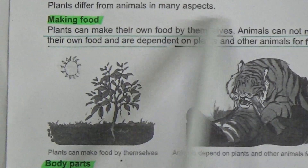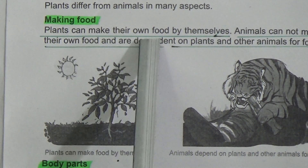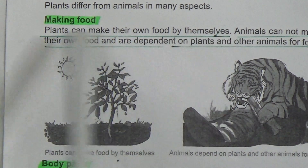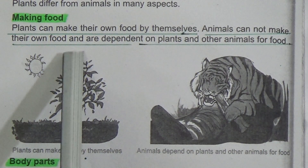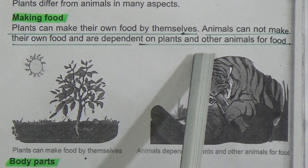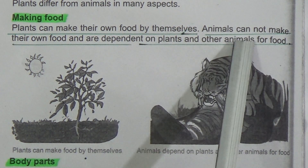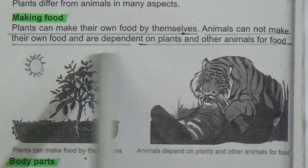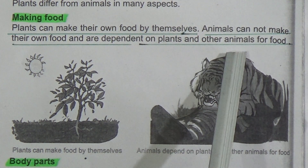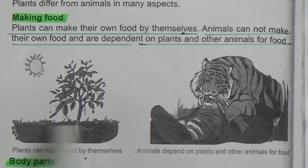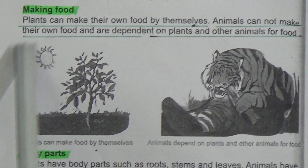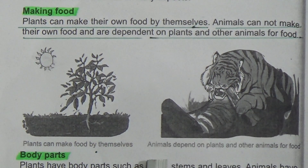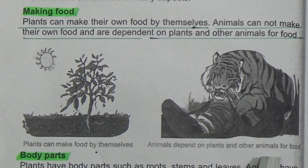Plants differ from animals in many aspects. Making food: plants can make their own food by themselves — underline this line. Animals cannot make their own food and are dependent on plants and other animals for food — underline this line. This picture shows plants making food by themselves with the help of sunlight, and the other picture shows animals depending on plants and other animals for food.